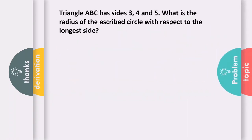Sample problem: Triangle ABC has sides 3, 4, and 5. What is the radius of the escribed circle with respect to the longest side? The longest side will be 5. So let's draw the figure.